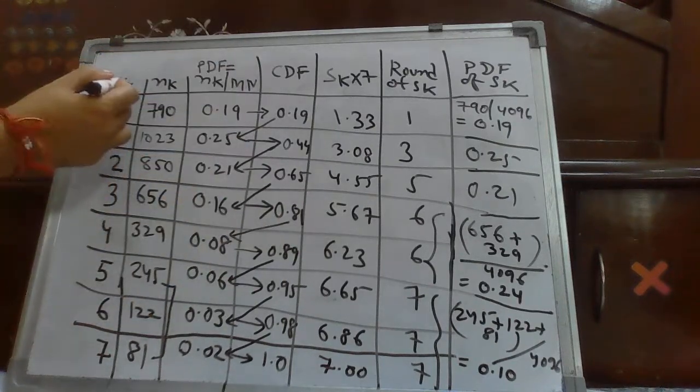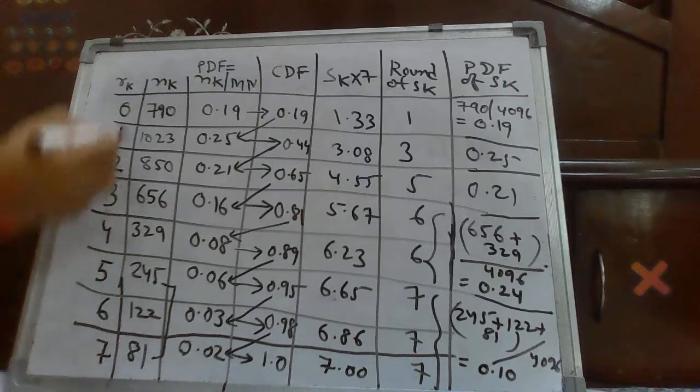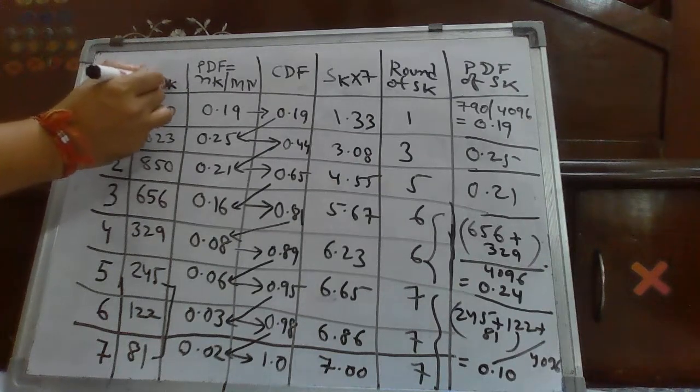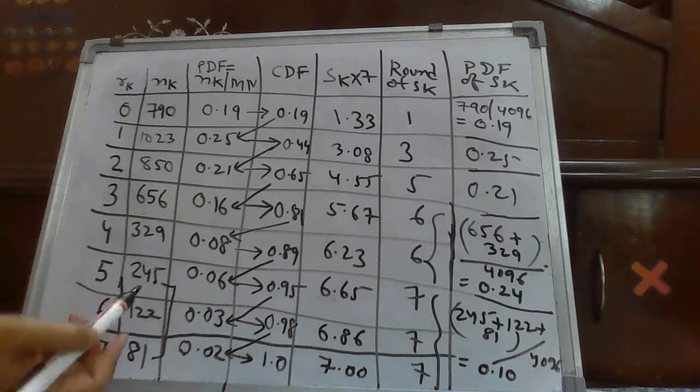Just like first column will be representing the different gray labels 0, 1, 2, 3, 4, 5, 6, 7. And second column will represent number of pixels having that K gray label. So, that is already given in the question. So, we have written like the same way.